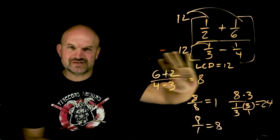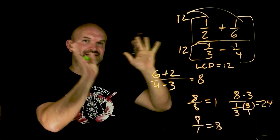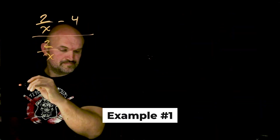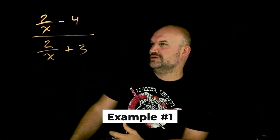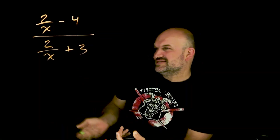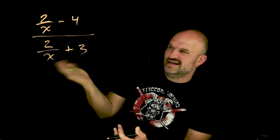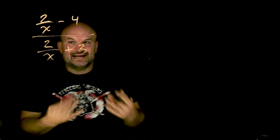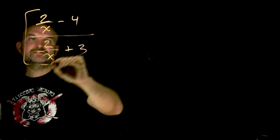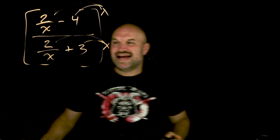Now ladies and gentlemen, this is all just with simple numbers. So let's apply this concept with some complex fractions with variable expressions. In this rational complex fraction, you can see we just have a fraction in the numerator, a fraction in the denominator, and it's both x. So if I want to get x off the denominator, I've got to have x divide into itself. So what I'm simply going to do is multiply the numerator and the denominator — make sure you distribute — by both terms by x.